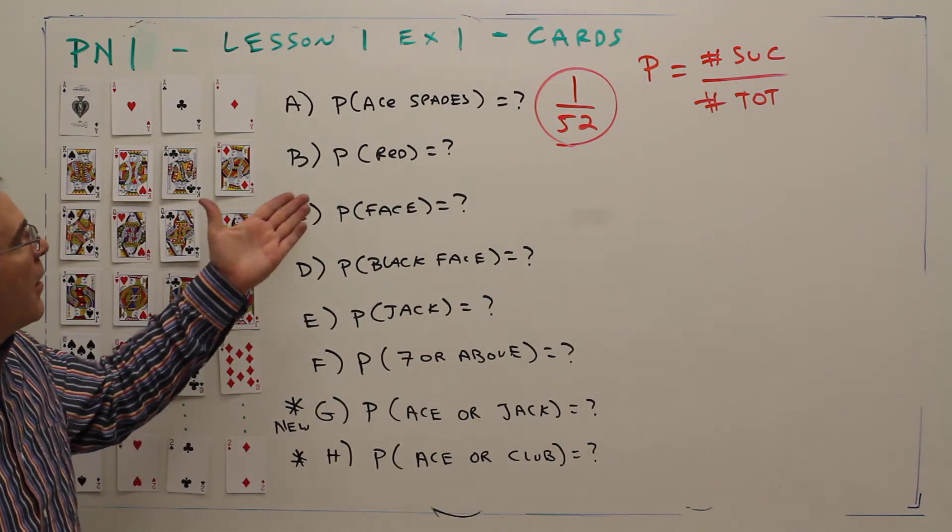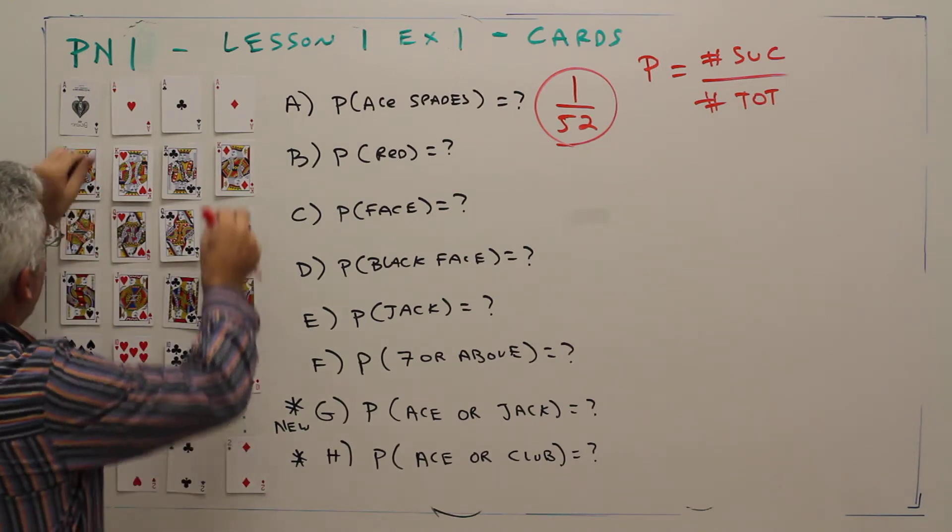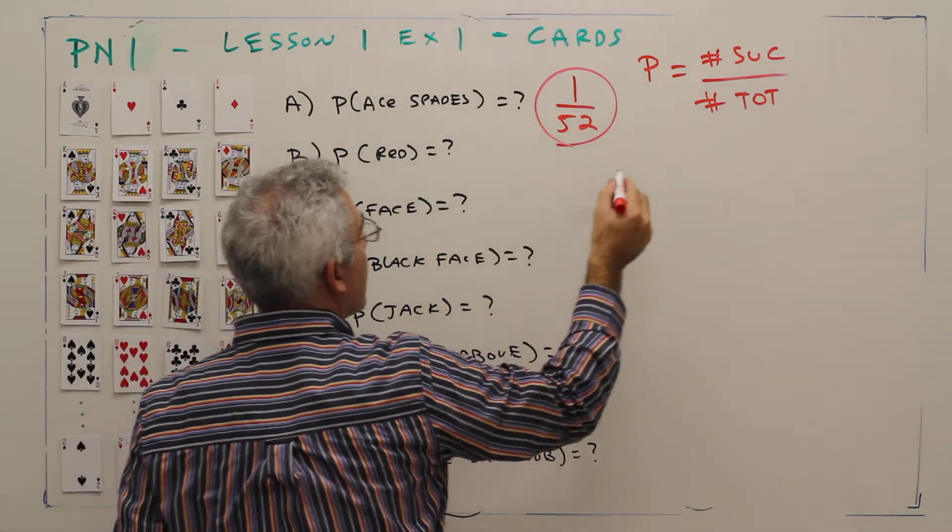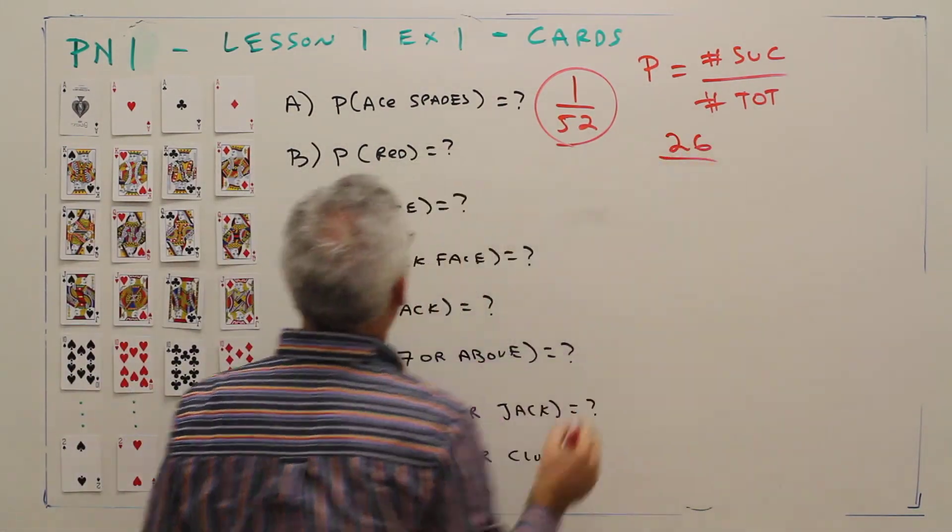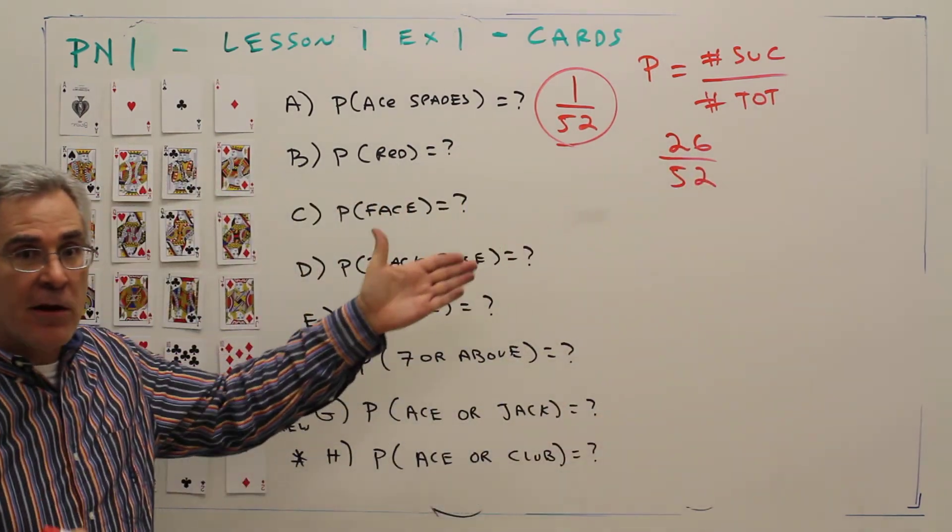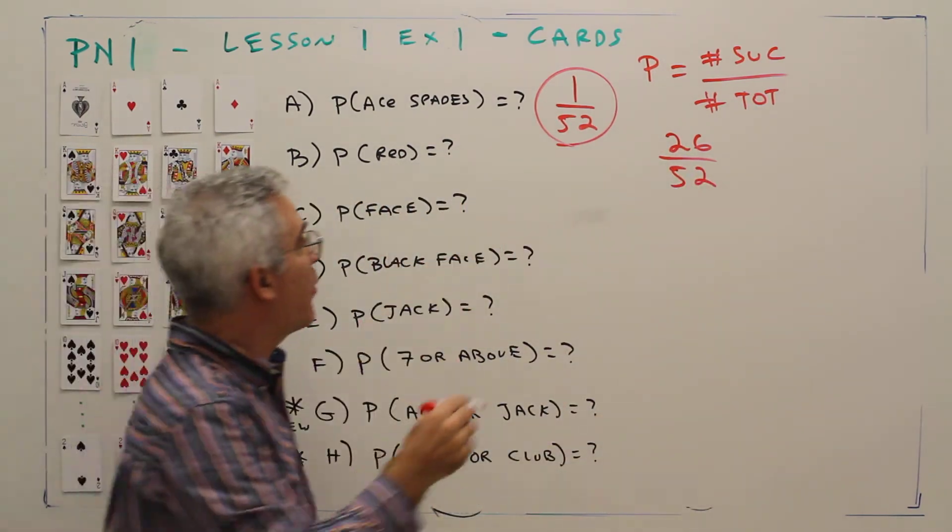Part B: what's the probability of selecting a red card? There's 26 red cards out of a total of 52. I'd like you to start with that, and then reduce later. That equals one half.